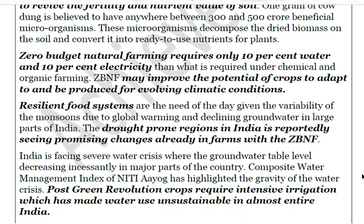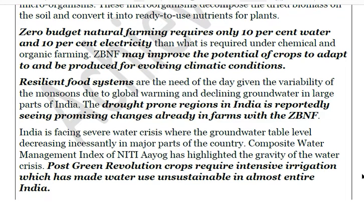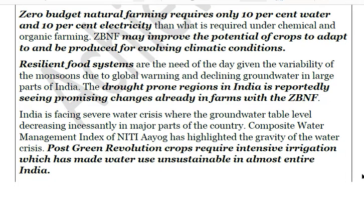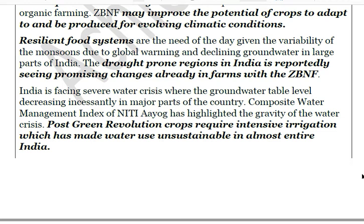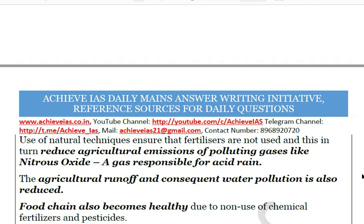As highlighted by the NITI Aayog report on the Composite Water Management Index, India faces a serious water crisis. Since agriculture is the largest consumer of water in India, ZBNF can help tackle this crisis by ensuring prudent use of resources. It may also improve the potential of crops to adapt to evolving climatic conditions. Resilient food systems are reportedly already showing promising changes in drought-prone areas. ZBNF can reduce dependence on water and make crops resilient to climate change.